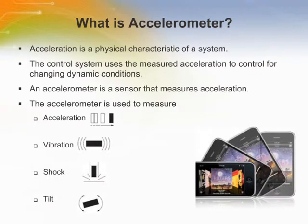Acceleration and its derivative properties, such as vibration and tilt, belong to the vast amount of physical quantities subject to measurement and analysis by various means. An accelerometer is the sensor used to measure acceleration. The control system uses the measured acceleration to control changing dynamic conditions.